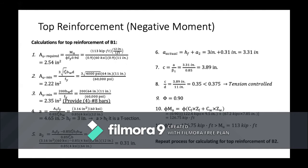C comes out to 3.89 inches. C/d equals 0.35, which is less than 0.375, so this is tension-controlled and the phi factor is 0.90. The nominal moment strength phi*Mn is calculated as phi times the flange couple plus the web couple, coming out to 126.75 kip-feet. Since phi*Mn is greater than Mu, the design is valid. The same process is repeated for the top reinforcement of B2.